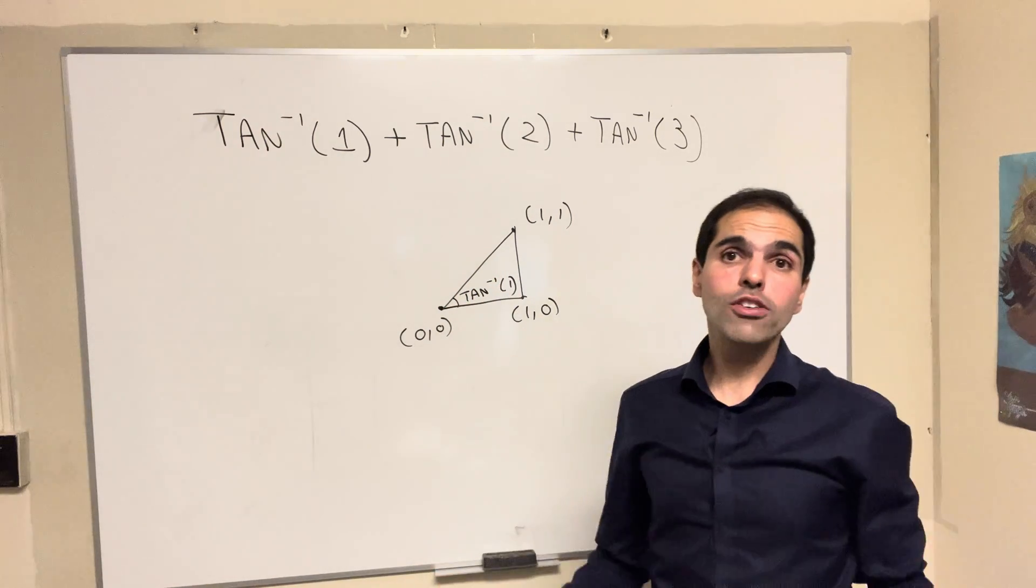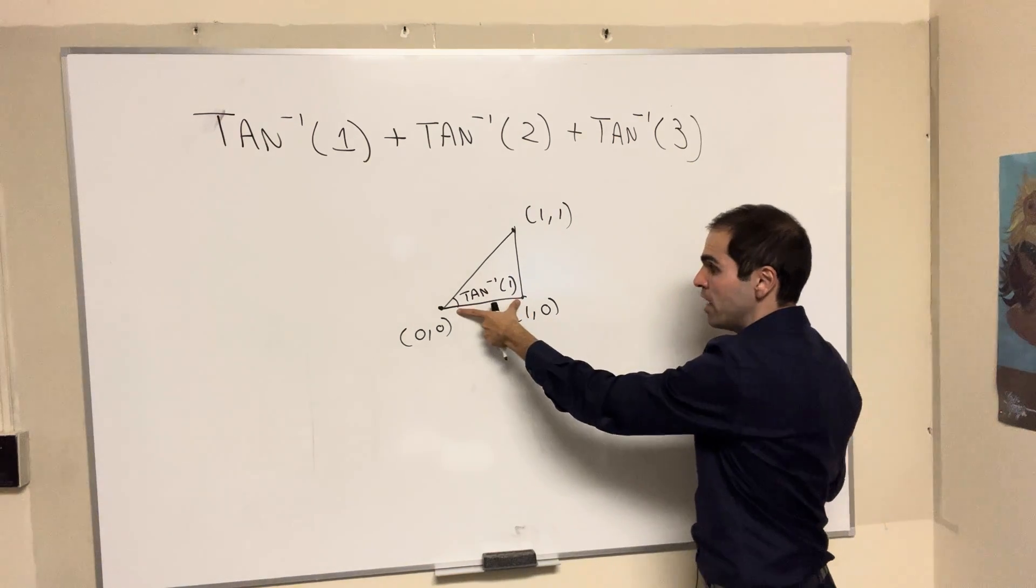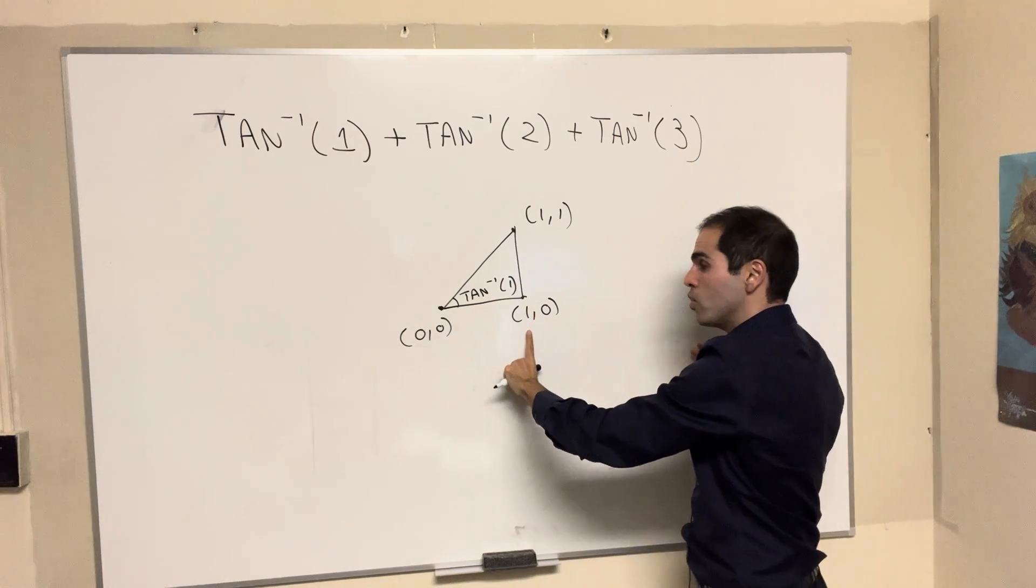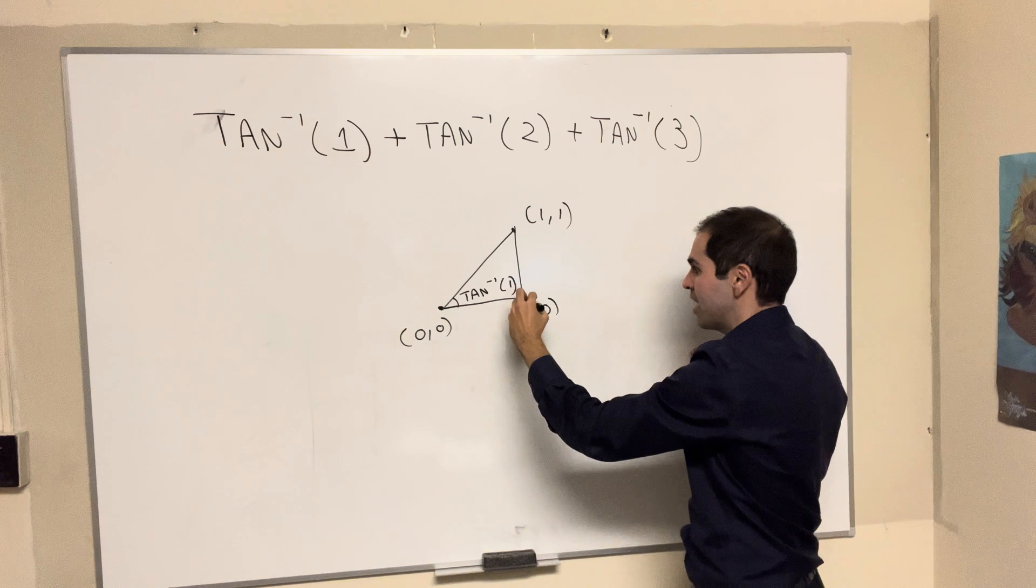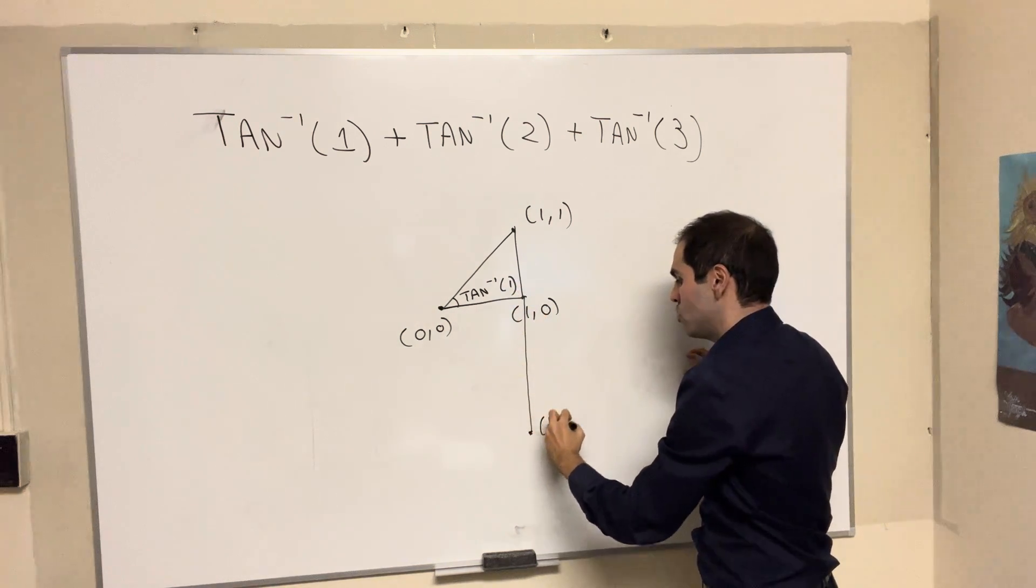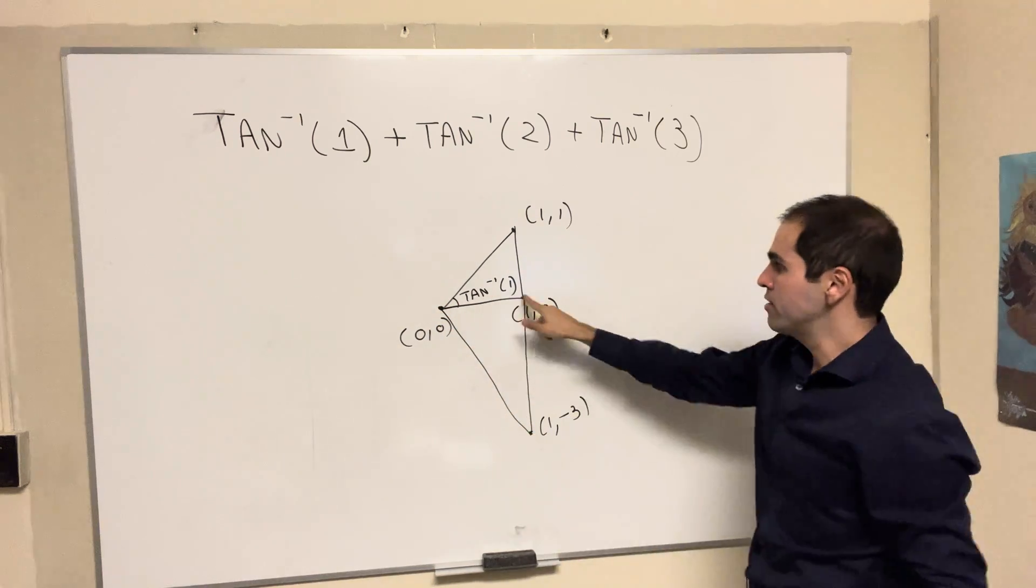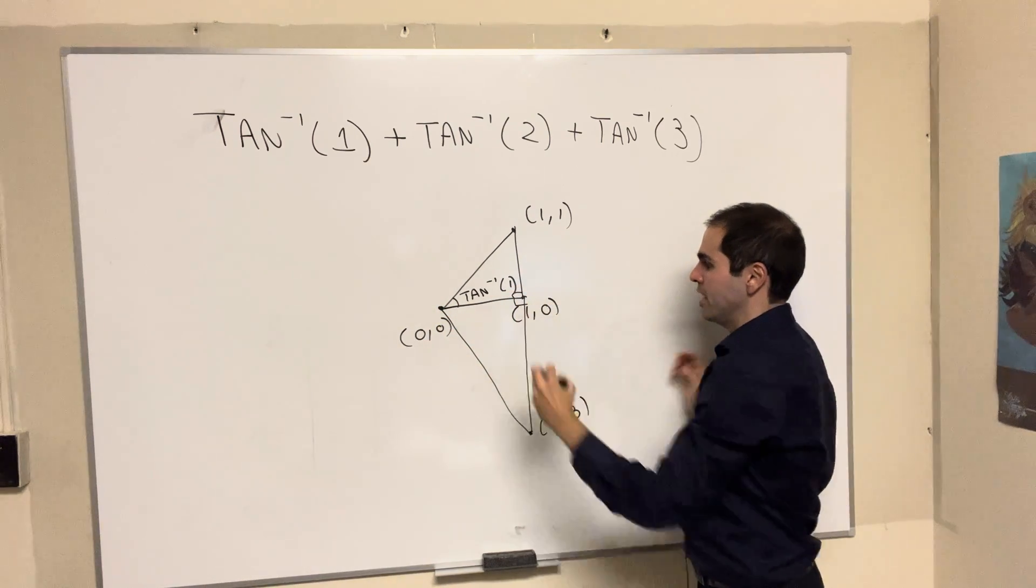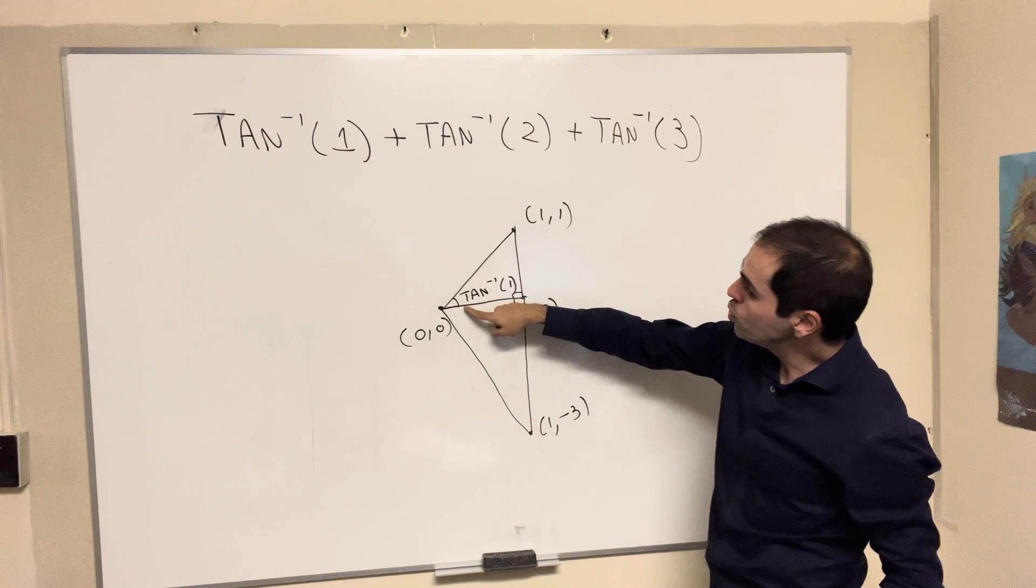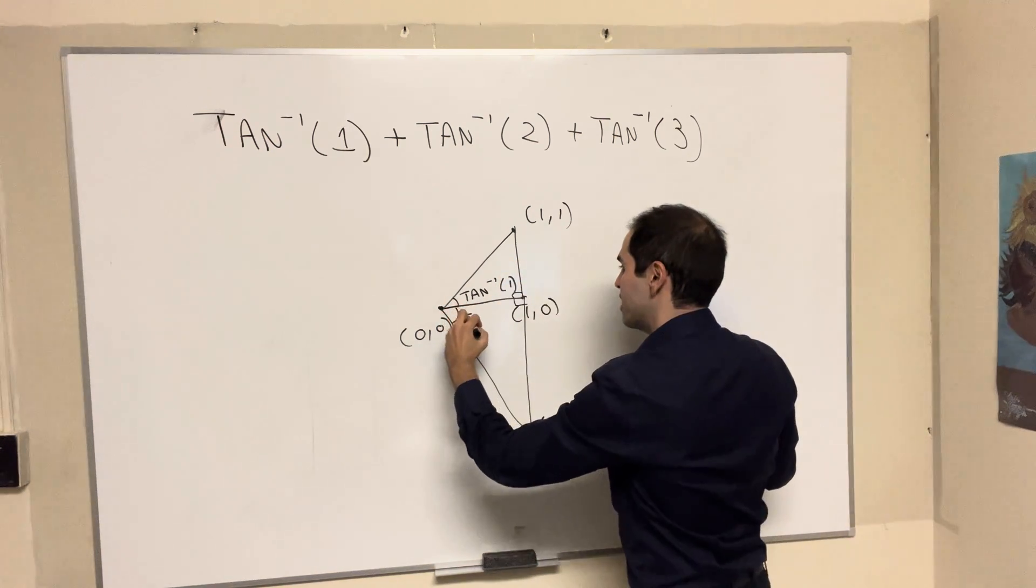And now let's think, how would you make arctangent of 3 appear? Well, we have side length 1, so extend this to have side length 3. In other words, just go down to (1,-3). Then yes, all those are right triangles. And we do have 3 and 1. So this angle is arctangent of 3.